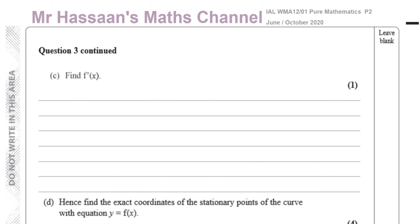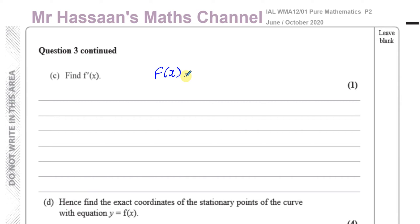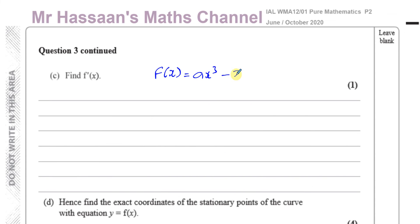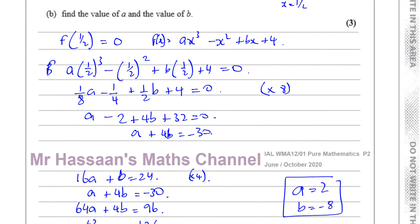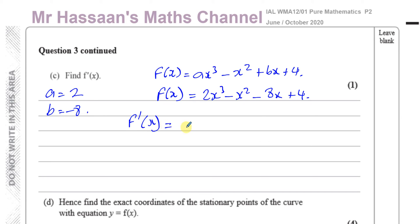Part c asks us to find f'(x). Writing down f(x) with a equals 2 and b equals minus 8: f(x) equals 2x cubed minus x squared minus 8x plus 4. Differentiating — multiply by the power and reduce the power by one — gives f'(x) equals 6x squared minus 2x minus 8.